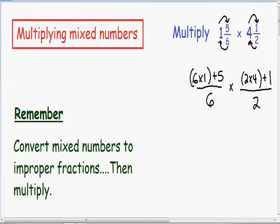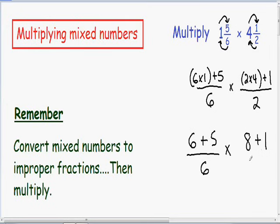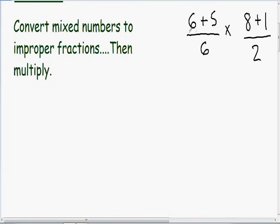So let's simplify these fractions as much as possible. In our first fraction, we have 6 times 1, which is just 6, and we still have to add the 5. And this is all being multiplied by our second fraction, which has 2 times 4. 2 times 4 is 8, and we still have to add our 1 — and this is all over 2. So in our first fraction we have 6 plus 5, which is 11, and we still have a denominator of 6. And this is being multiplied by our second fraction, which has 8 plus 1 in the numerator, which is 9, and we still have a denominator of 2.